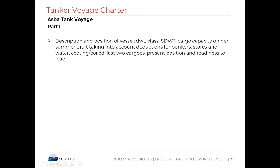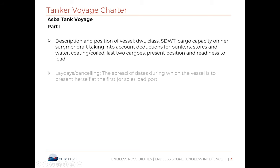In this section, details such as deadweight, class, cargo capacity on a summer draft — taking into account deductions for bunkers, stores, water, coatings, last two cargoes — as well as present position and readiness to load are all included.